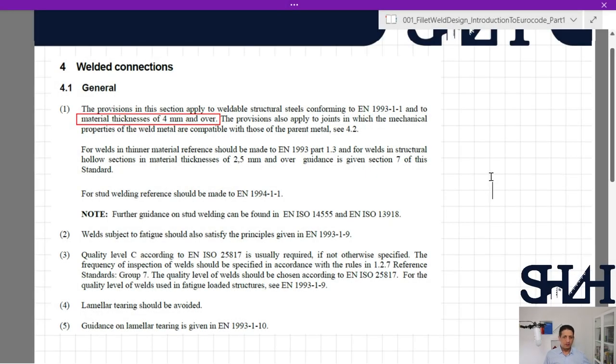The weld connection is given in Section 4 of Eurocode 1993-1-8. In general option, we read the first item that the material thickness should be 4 millimeters or over.